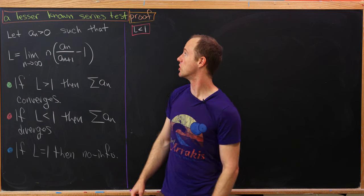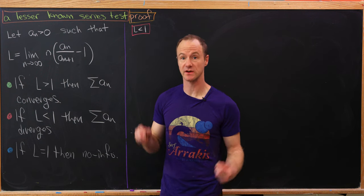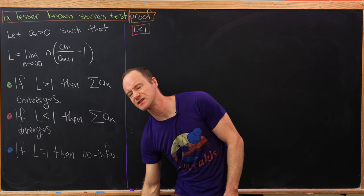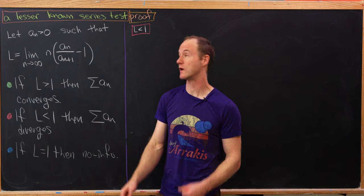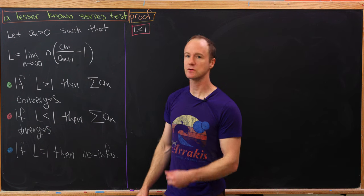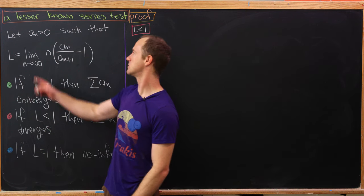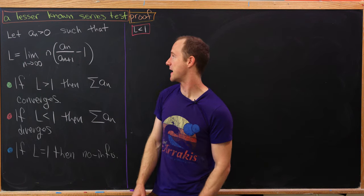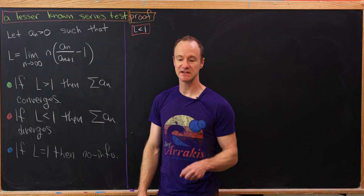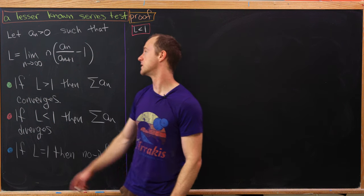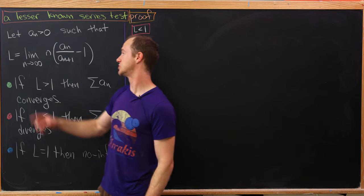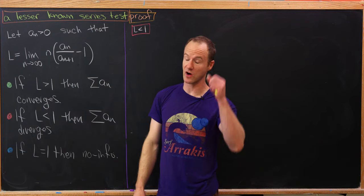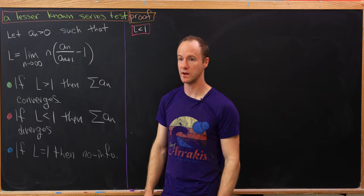Today we're going to look at a lesser known test for convergence called Raabe's test, which is somewhat of a generalization of the ratio test. Suppose we have a sequence of positive real numbers a_n satisfying the following rule: l is equal to the limit as n goes to infinity of n times (a_n over a_{n+1} minus one).